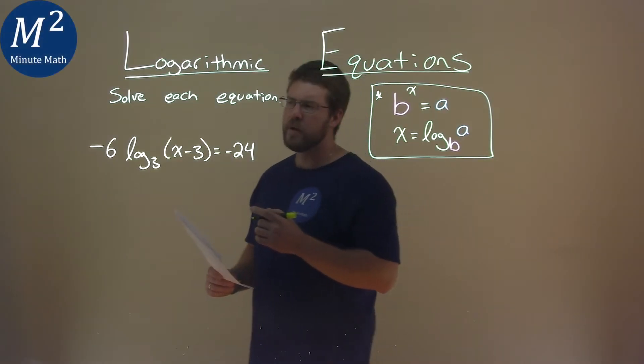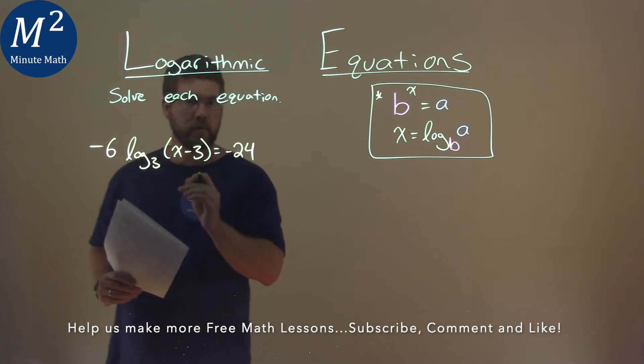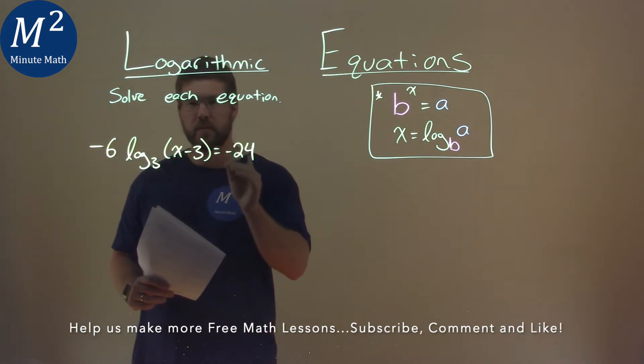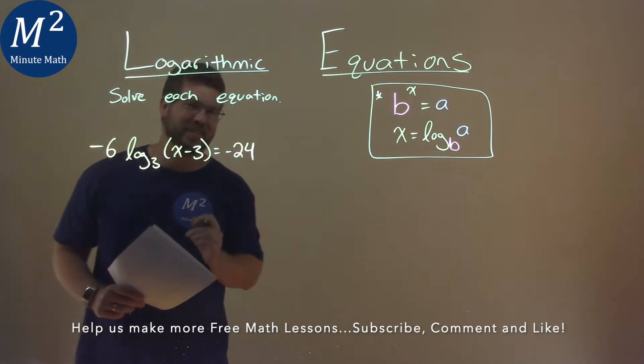We're given this problem right here, negative 6 times log base 3 of x minus 3 equals negative 24, and we have to solve this equation.